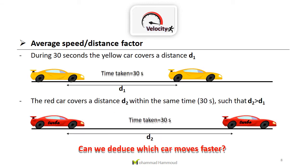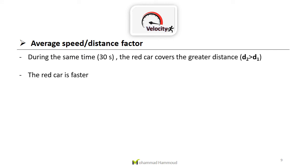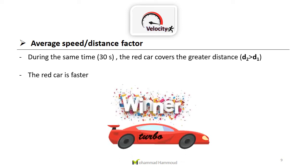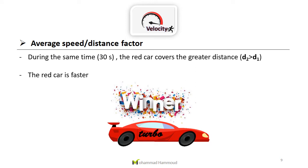We have a second example: a yellow car and a red car. During 30 seconds, the yellow car covers a distance d1, while the red car in the same time of 30 seconds covers a distance d2. From the diagram it is clear that d2 is greater than d1. During the same time of 30 seconds, the red car covered a greater distance than the yellow car, so the red car is faster — it is faster because it covered a greater distance in the same time.